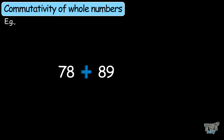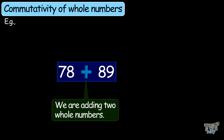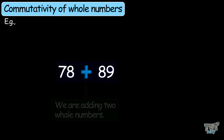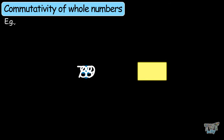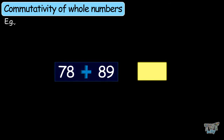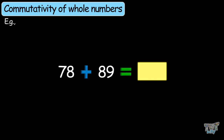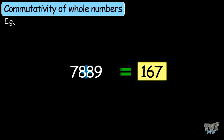78 plus 89 — here we are adding two whole numbers and the answer is 167. Now what will be the answer if you move these numbers to each other's place? That is 89 plus 78. Will the answer be the same? The answer is again 167. So this means you can move numbers in the case of addition, or you can add numbers in any order.